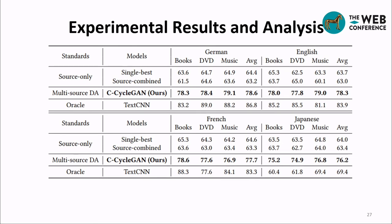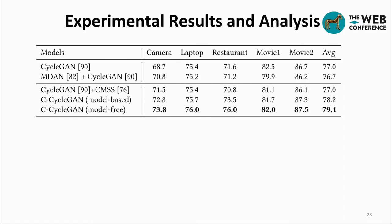Here are the results on the Multilingual Amazon Reviews corpus. We conduct ablation studies where the first two rows are results from simply applying CycleGAN and combining MDAN with CycleGAN. The last three rows show results of different weighting mechanisms. Our weighting strategy is consistently better than MSS's weighting mechanism, and furthermore, the model-free method outperforms the model-based method.